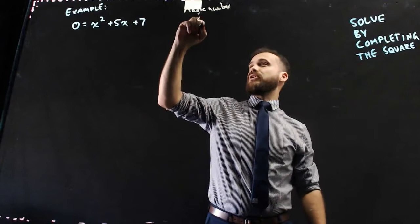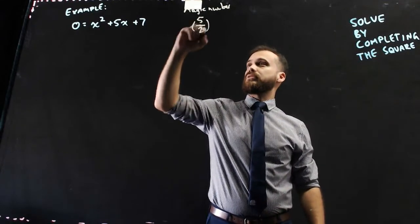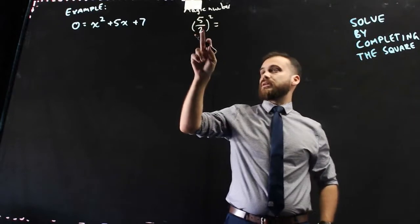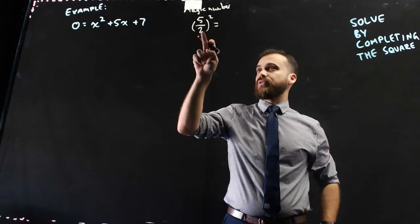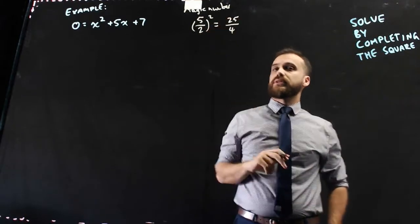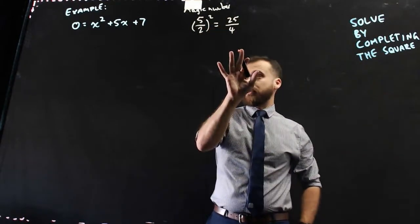So that's going to be 5 over 2 squared. Now that's going to be the same as 5 squared over 2 squared, so that's going to be the same as 25 over 4. Okay, so now that I've got my magic number...